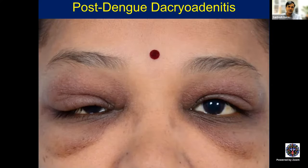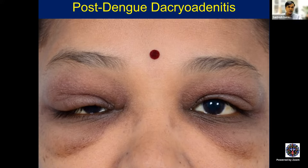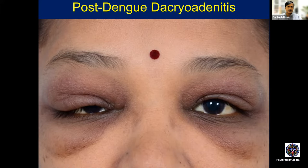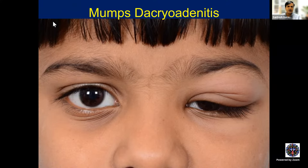Dengue-associated dacryoadenitis shows much more severe, periocular, asymmetrical inflammation. This is mumps dacryoadenitis — this child had mumps and developed unilateral dacryoadenitis. Mumps dacryoadenitis is typically bilateral, but children can develop unilateral dacryoadenitis. You can see dacryoadenitis involving the palpebral lobe of the lacrimal gland very clearly.